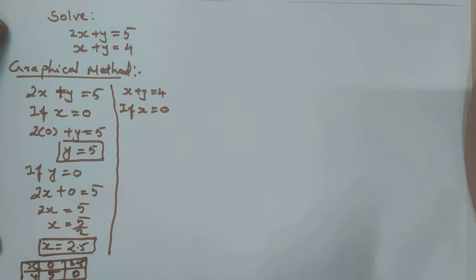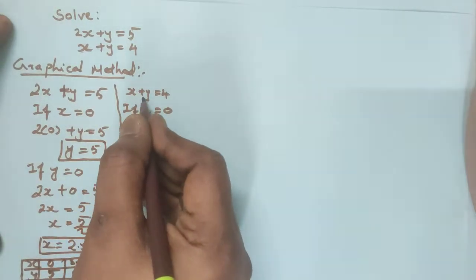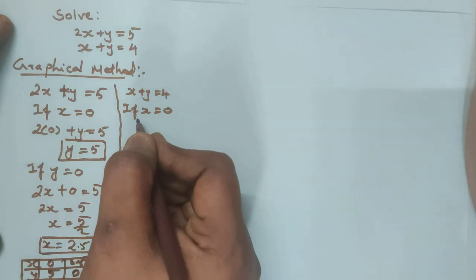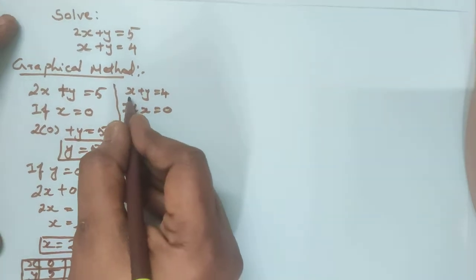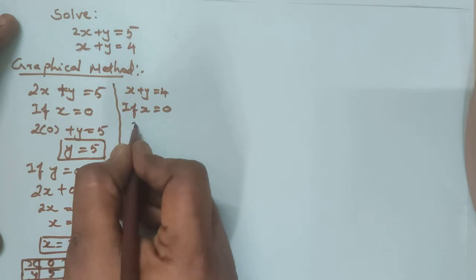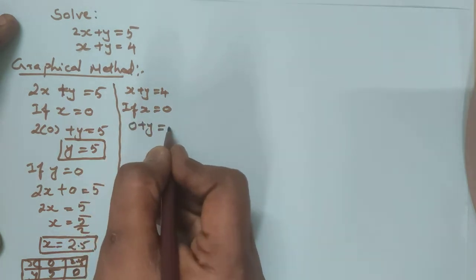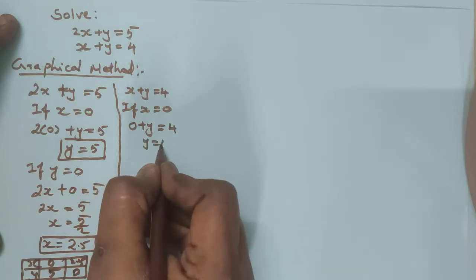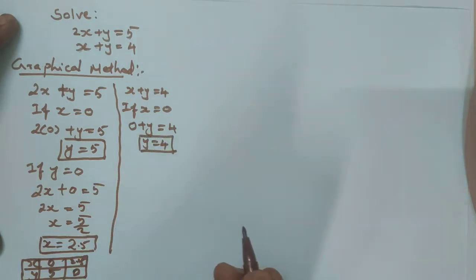Now take the second equation x plus y is equal to 4. First assume x is equal to 0. If you substitute x as 0 in this equation, you will get 0 plus y is equal to 4. Therefore y is equal to 4.